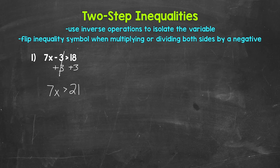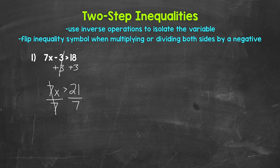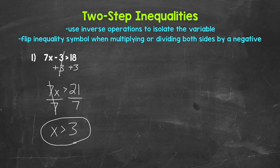So now we have 7x is greater than 21 — that's 7 times x is greater than 21. We need to undo that multiplication using the inverse operation, which is division. Divide the left side by 7, and divide the right side by 7 as well. These sevens cancel each other out, x is now isolated, and 21 divided by 7 gives us 3. So our answer is x is greater than 3 — x can be any value greater than 3.